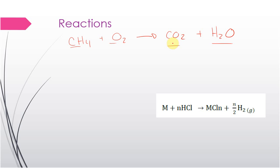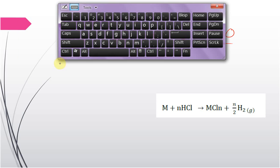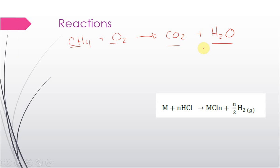Matter is neither created nor destroyed — that first law from chapter one holds here. So we need a balanced equation, which means everything you have on the left you should have on the right. Let's make a tally: C, H, O. We have one carbon on the left, four hydrogens, and two oxygens. That means we should have one carbon, four hydrogens, and two oxygens on the right.